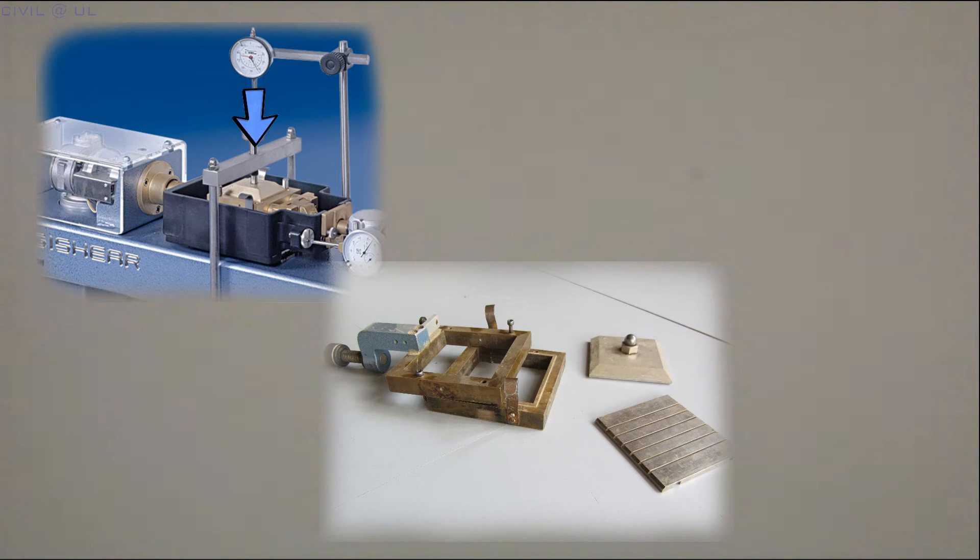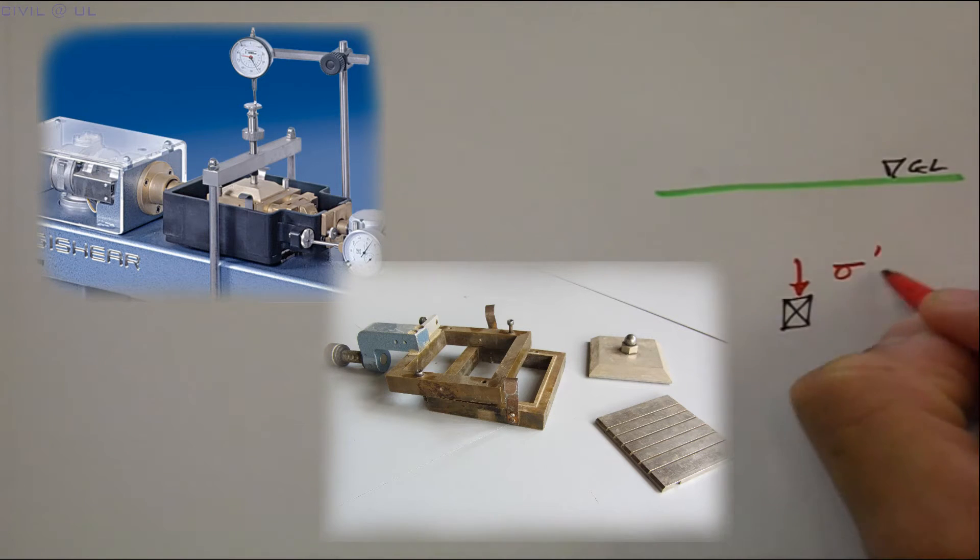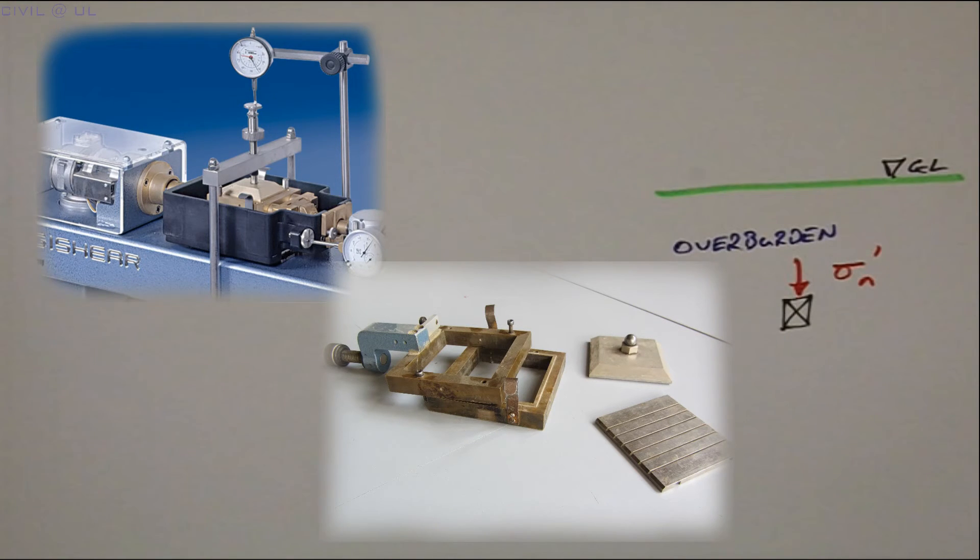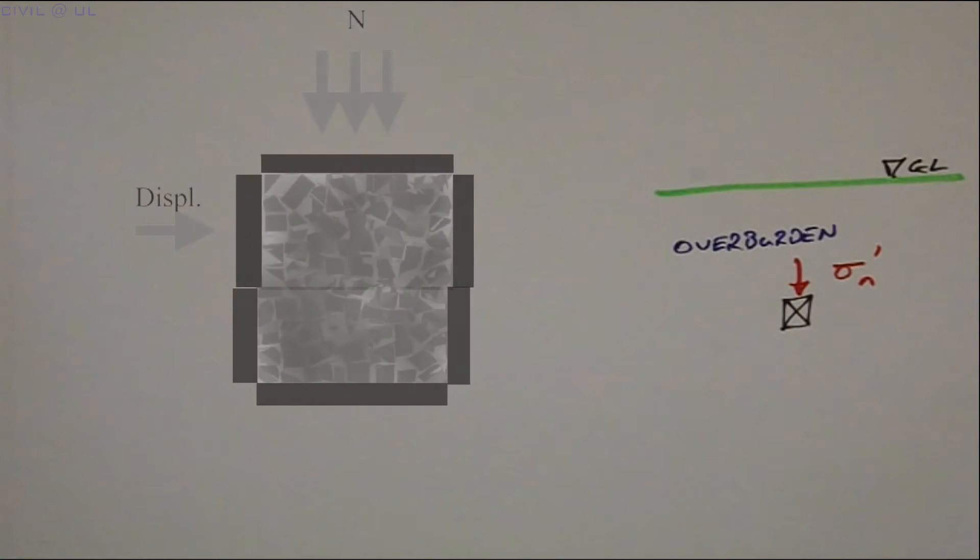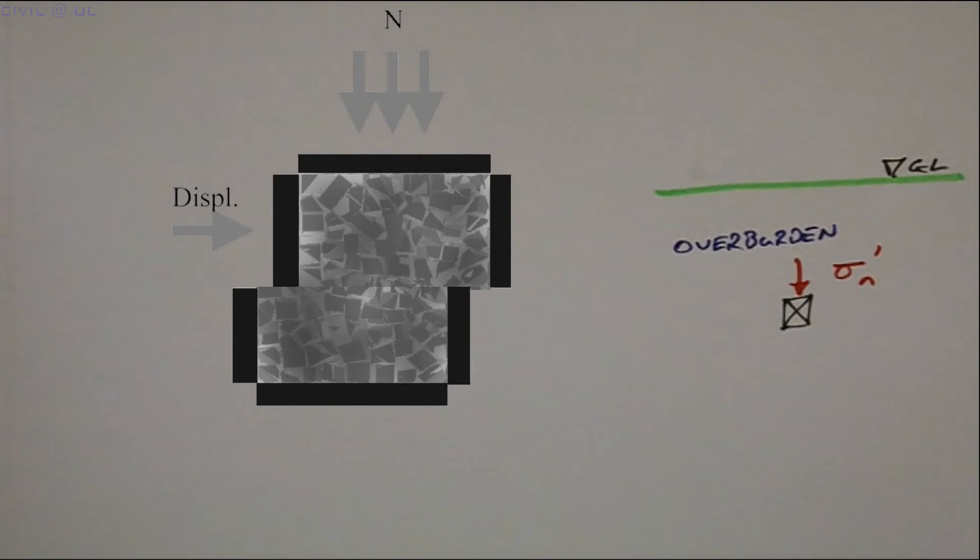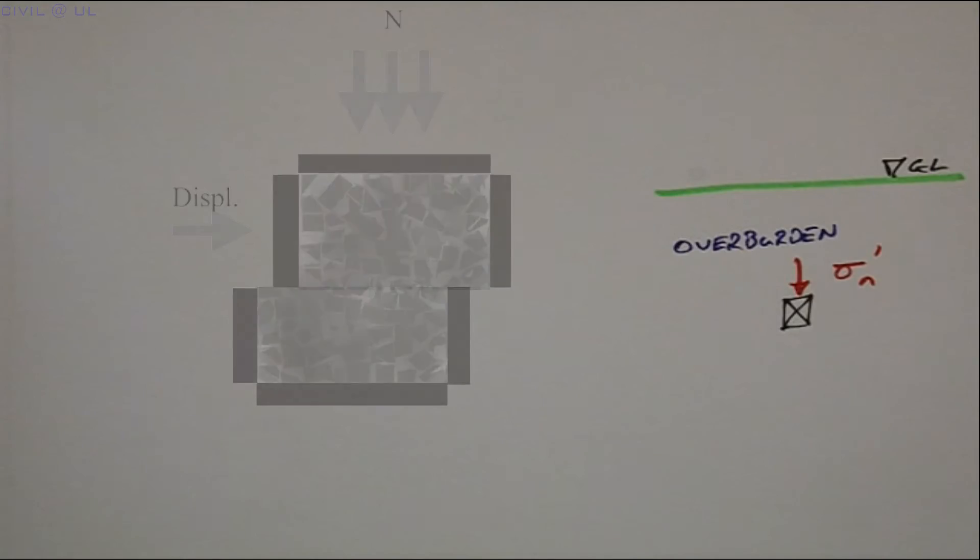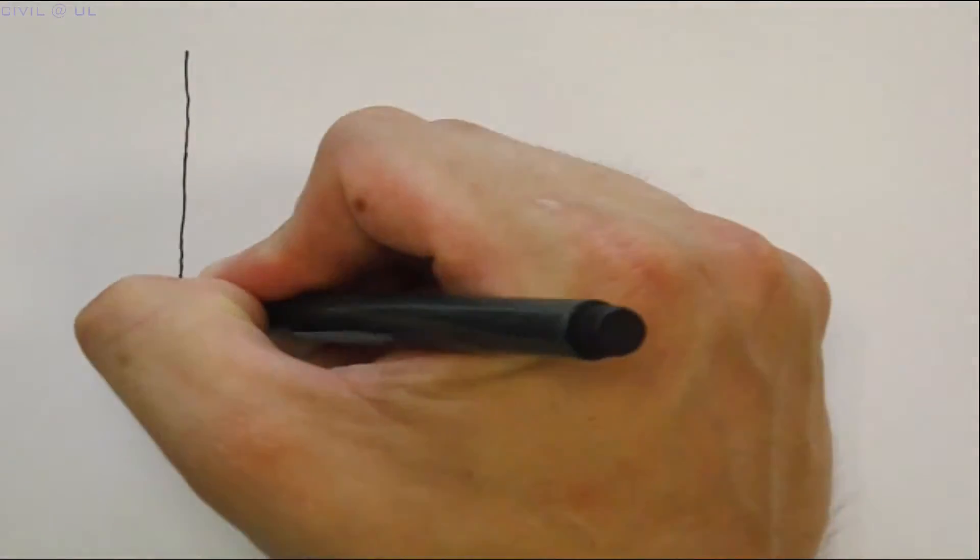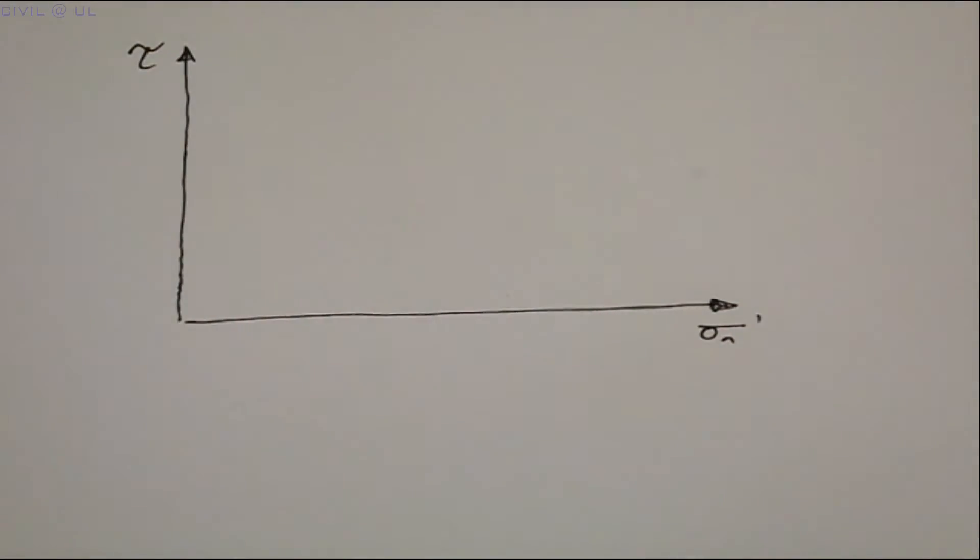A normal vertical stress is then applied to the sample to simulate some in situ loading condition, such as the overburden pressure due to soil at a given depth. The test specimen is then sheared until the limiting shear force has reached. And this can be converted into shear stress by dividing it by the area of the test specimen. The combination of normal effective stress and shear stress at failure gives us one point on the failure line.